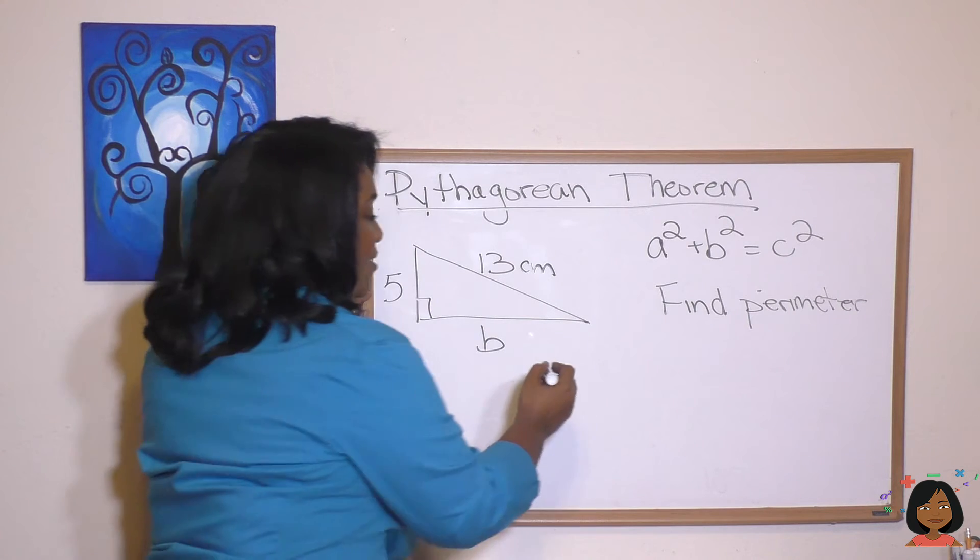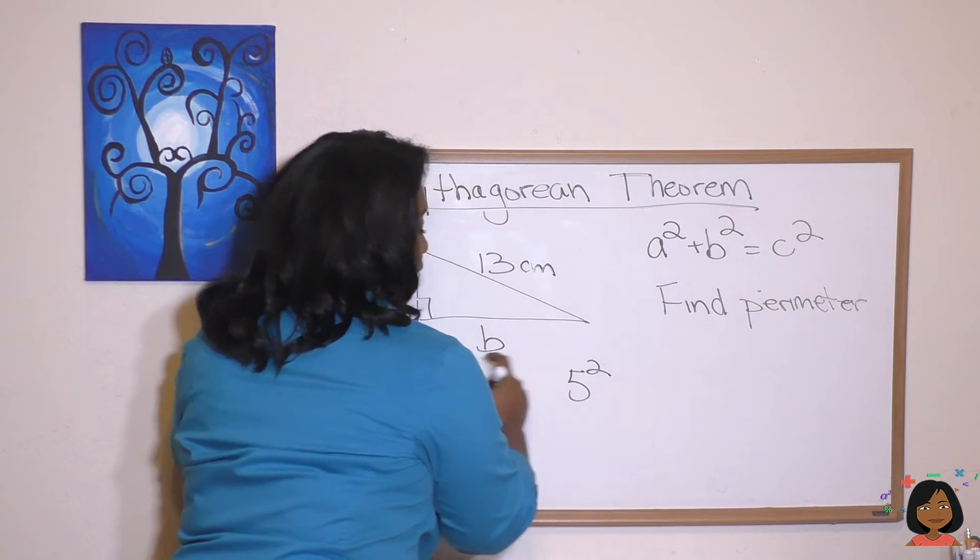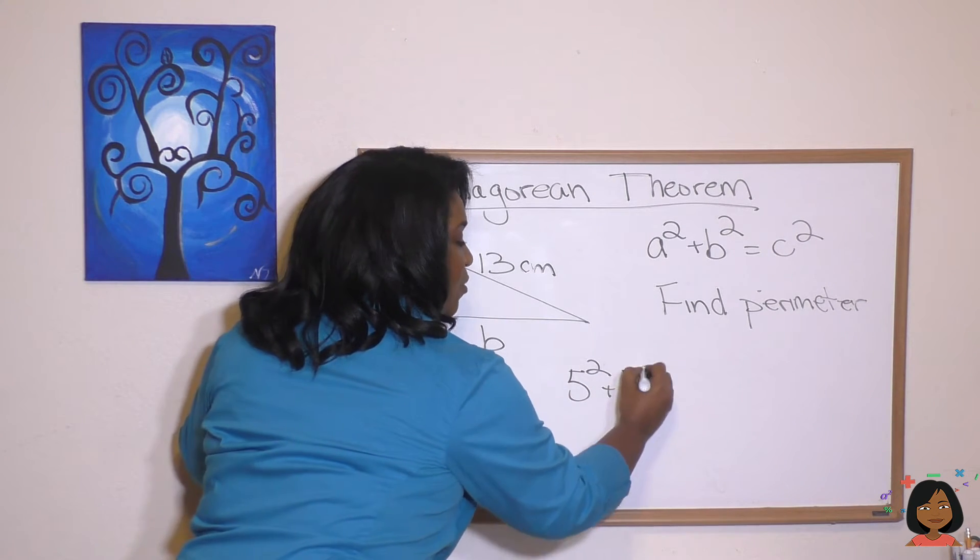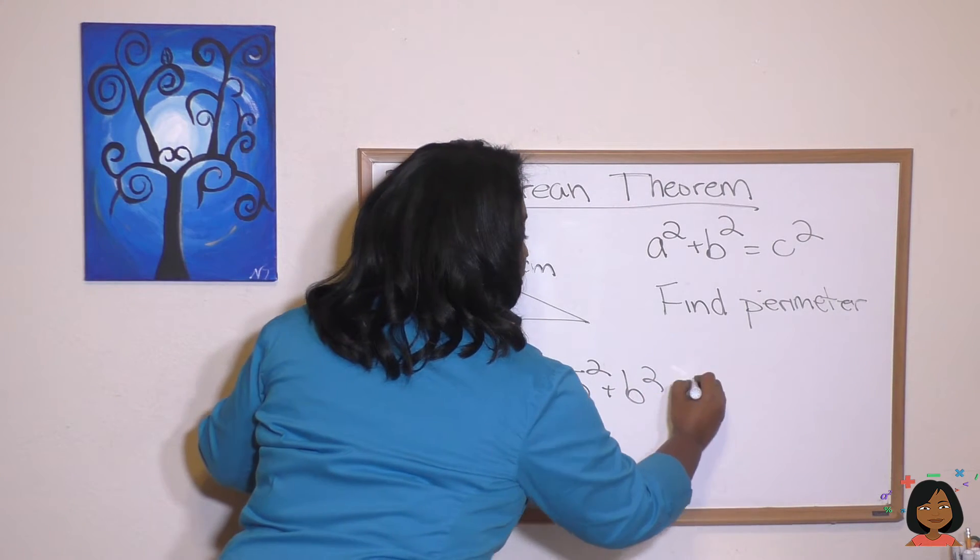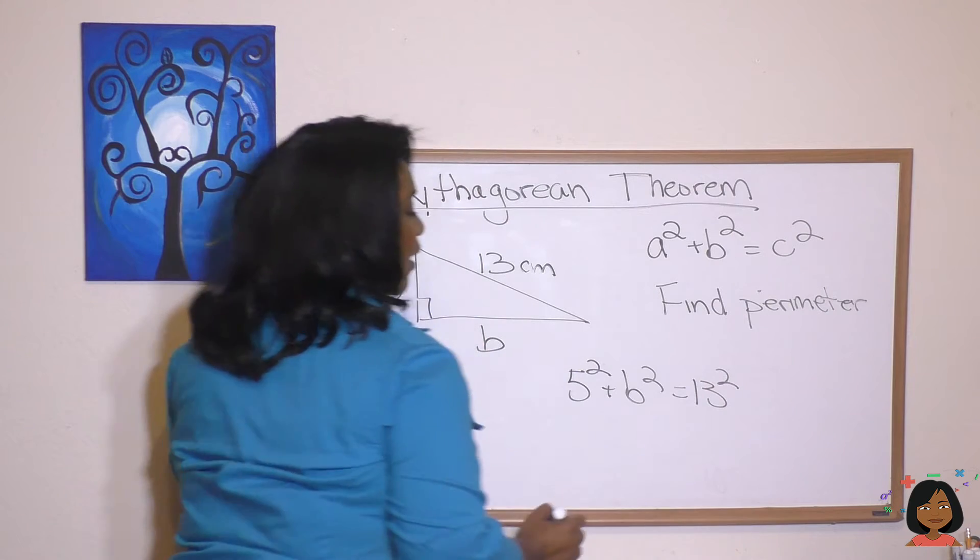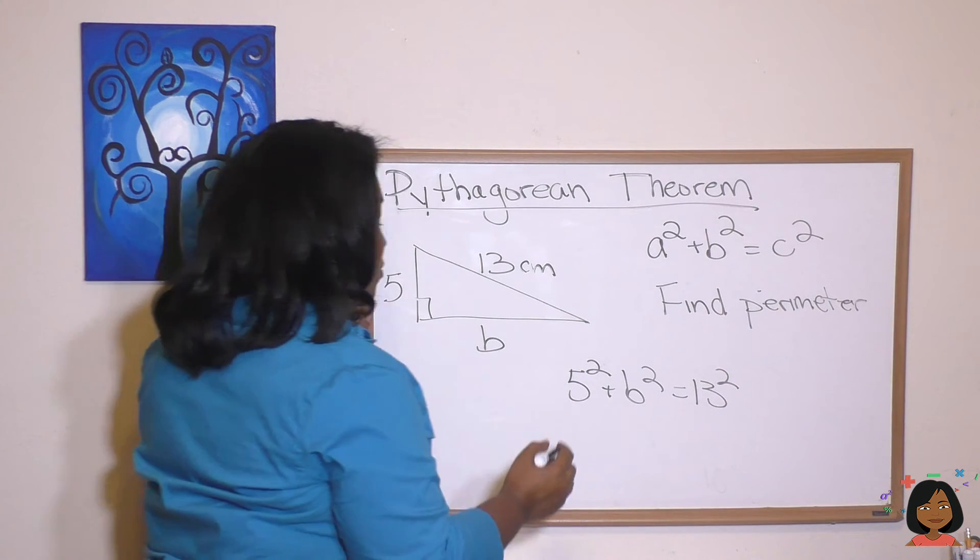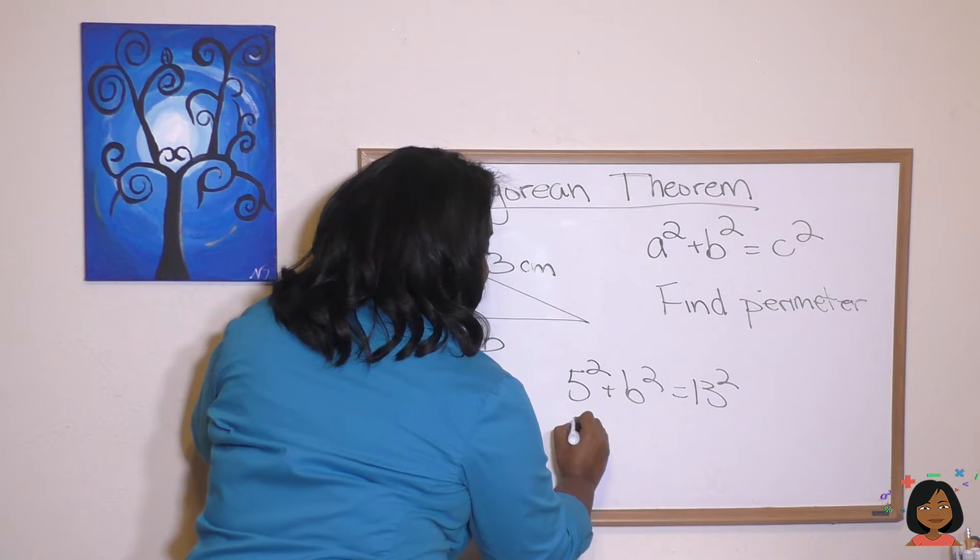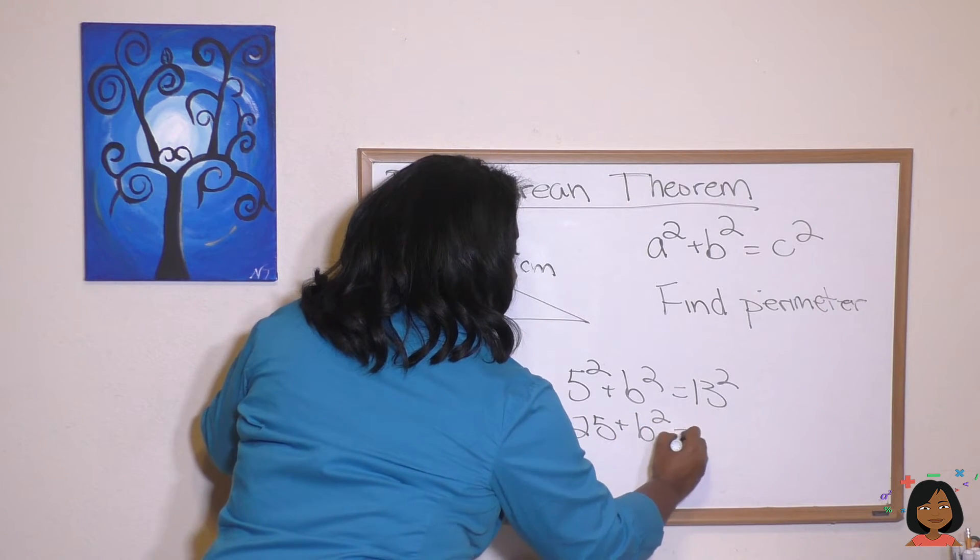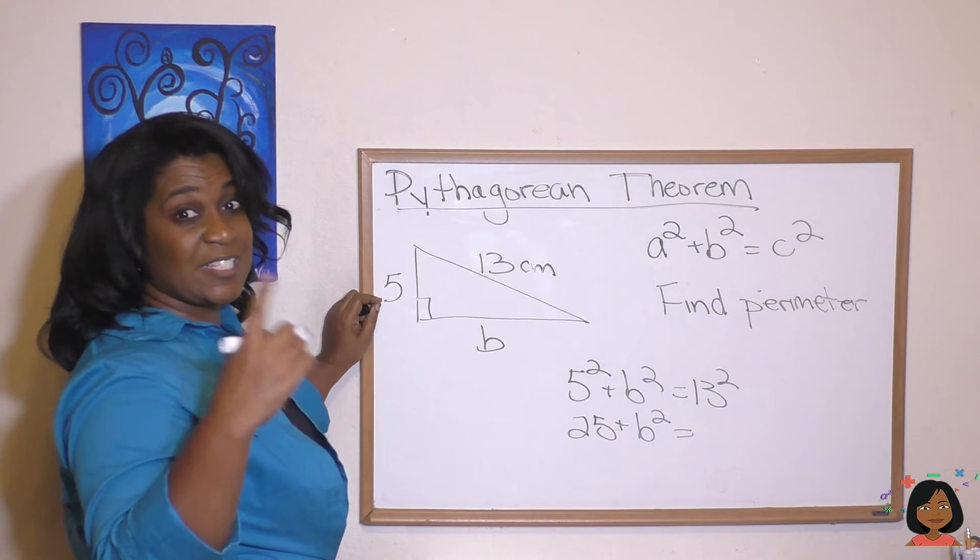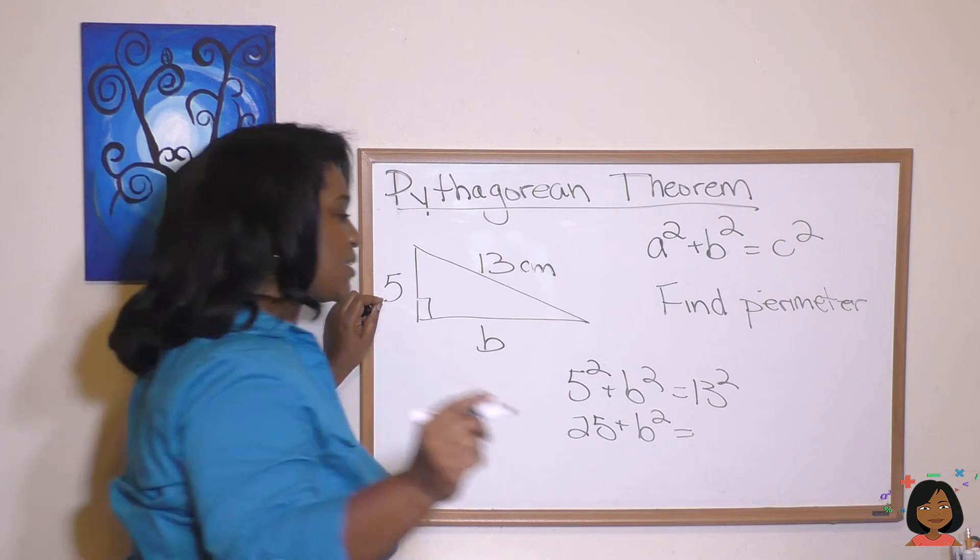Okay, let's do it. a squared, 5 squared, plus b squared. We don't know b, so we keep it b squared, equals 13 squared. Let's fill in the numbers that we know. 5 times 5 is 25, plus b squared, equals 13 times 13 is 169.